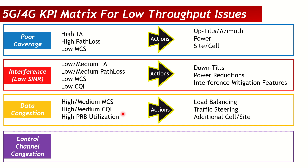For data congestion, the first action is load balancing. If you have multiple carriers — say 2600, 2100, 1800, 900, 800 — and 1800 is highly congested, you can trigger load balancing to move users from 1800 to another carrier that is not congested. This reduces load on 1800 and improves throughput. Another option is traffic steering — you can shift traffic to another carrier using idle mode mobility.